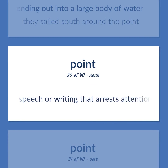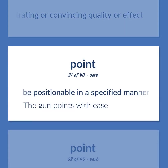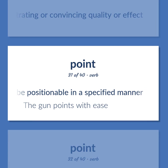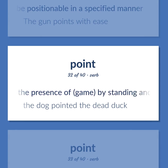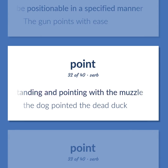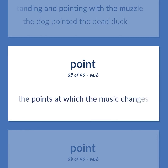A style in speech or writing that arrests attention and has a penetrating or convincing quality or effect. Be positionable in a specified manner — the gun points with ease. Indicate the presence of game by standing and pointing with the muzzle — the dog pointed the dead duck. Mark a psalm text to indicate the points at which the music changes.